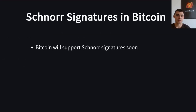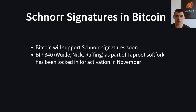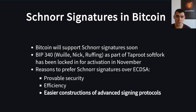The Bitcoin network will support Schnorr signatures soon. The Schnorr signature specification called Bitcoin Improvement Proposal 340 is part of the ongoing Taproot software upgrade and has been locked in for activation in November. There are a few reasons to prefer Schnorr signatures over ECDSA: provable security, efficiency, and most importantly for this work, Schnorr signatures allow easier construction of advanced signing protocols.